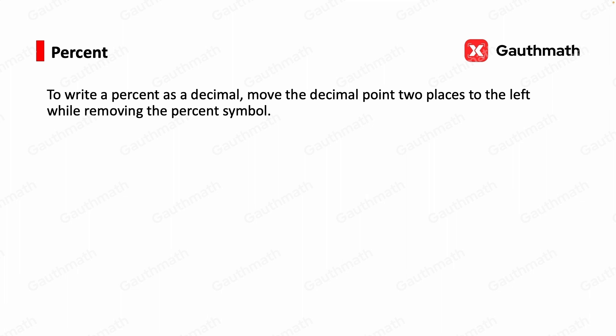To write a percent as a decimal, move the decimal point two places to the left while removing the percent symbol. For example, 16%: remove the percent symbol and move the decimal two positions to the left, so 16% equals 0.16. Another example: 6% — move the decimal two places to the left and add a zero to fill the space, so 6% equals 0.06.